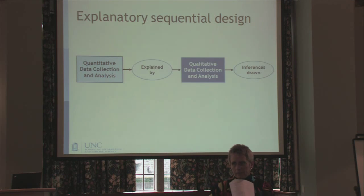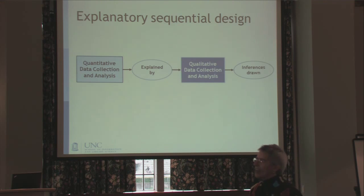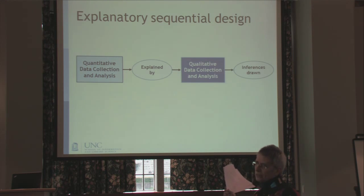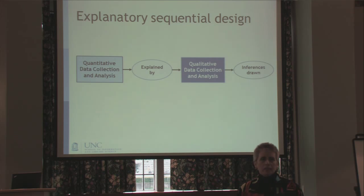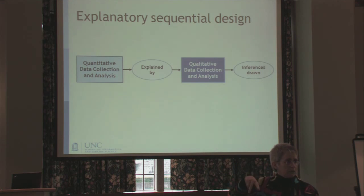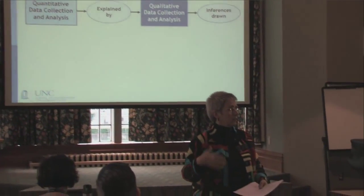I think the explanatory sequential design is actually as close as we're going to get to what happened in the Kwon study. Textbook examples are idealized and very clean, but in real studies things don't get quite so neat. The Kwon study had quantitative data first — the two scales and their correlation — and then used the qualitative essays and what was analyzed from them to explain that result.